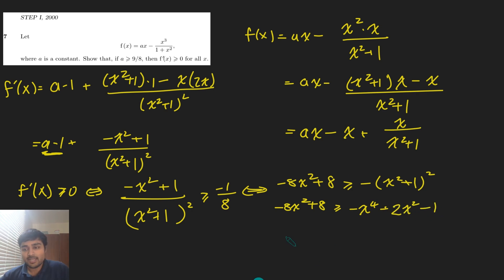Now we just bring everything onto the left side. We're going to get x to the 4 minus 6x squared plus 9 is at least 0. And this is quite nice. This is just x squared minus 3 squared, which is at least 0.